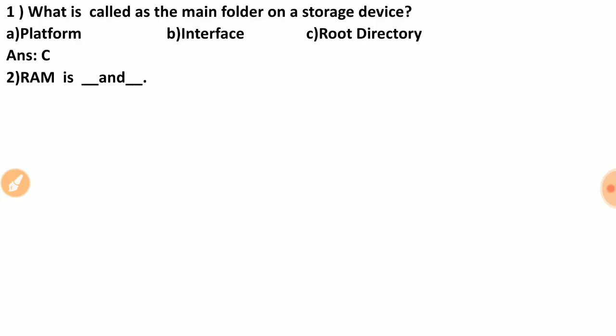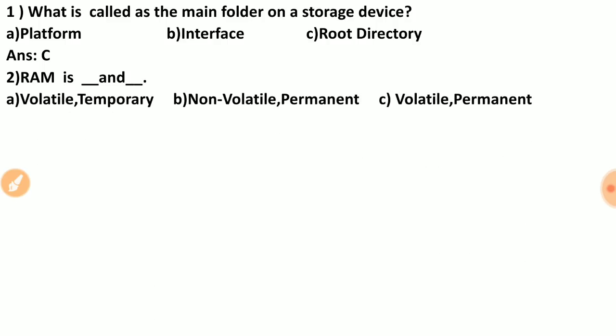Question two: RAM is dash and dash. Options are: volatile/temporary, non-volatile/permanent, volatile/permanent. RAM stands for Random Access Memory — it is volatile memory, meaning it is temporary memory. So RAM is volatile and temporary.